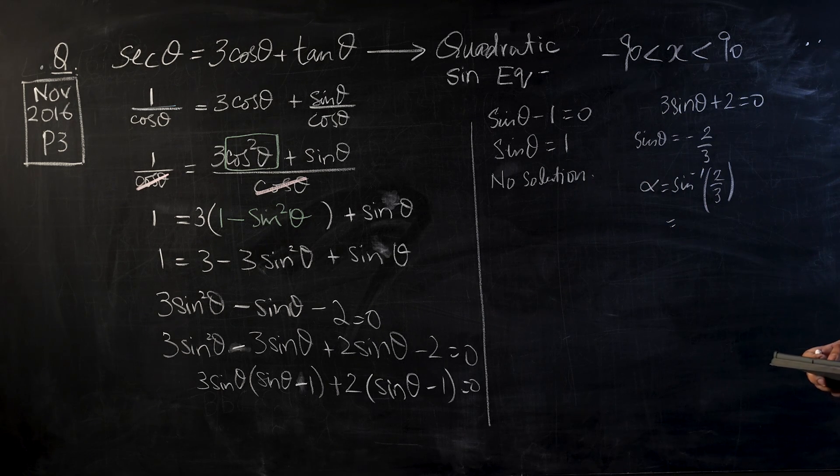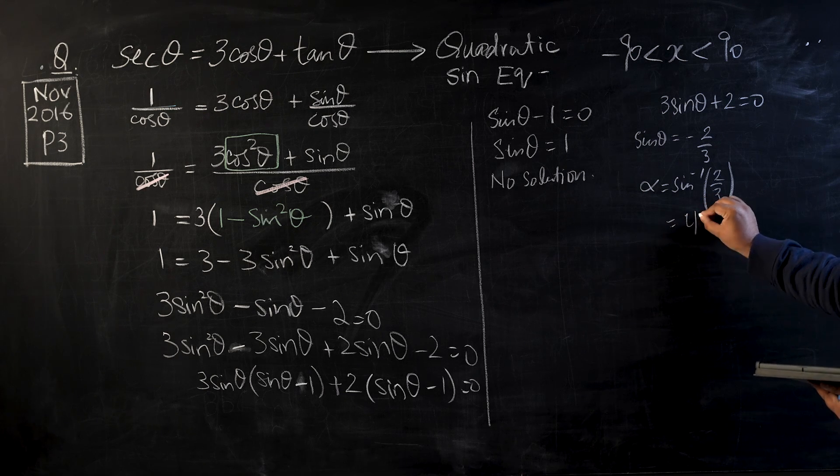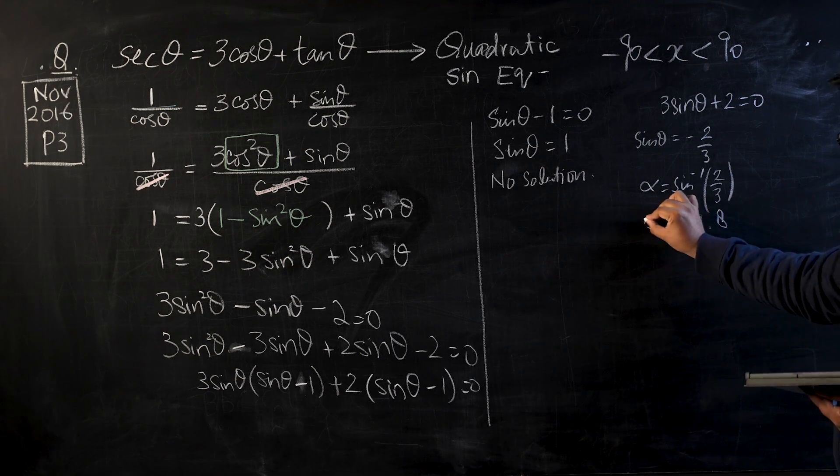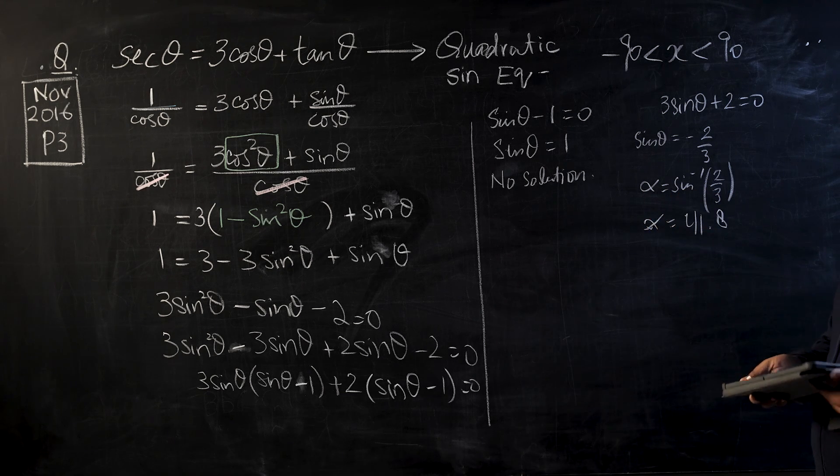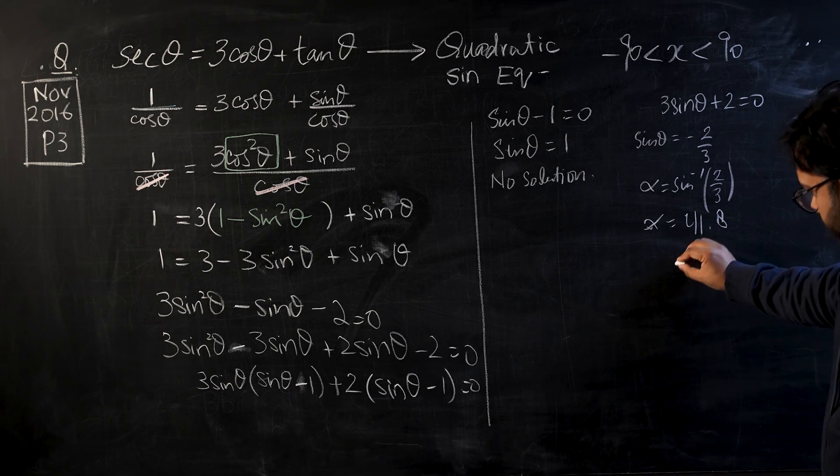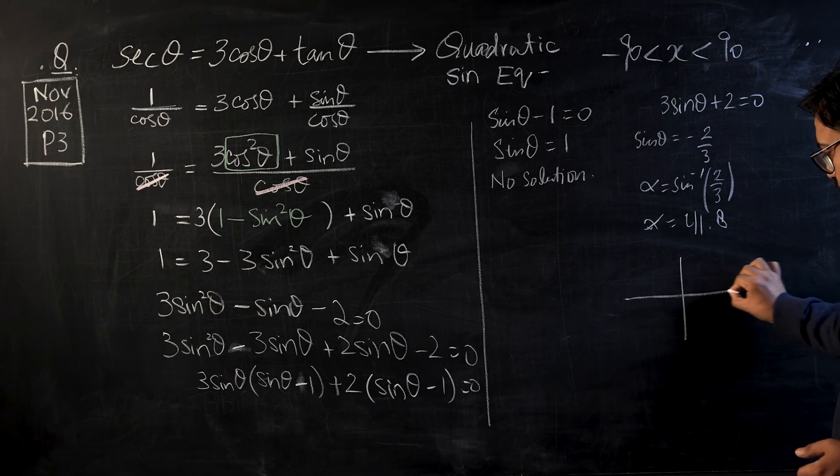Alpha, that will be sin inverse of 2/3. And once we have the basic angle, let me have a quick look at the basic angle. Yep, so the basic angle would be 41.8.